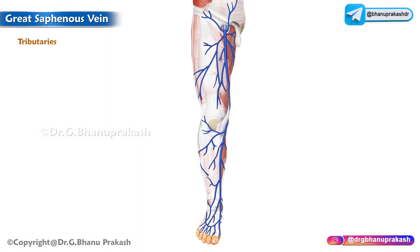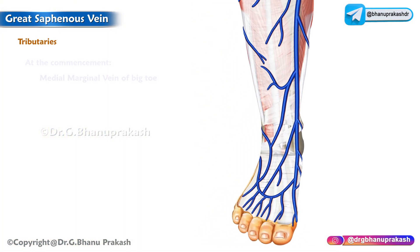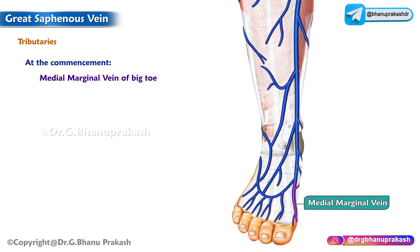It passes through the saphenous opening after piercing the cribriform fascia, where it drains into the femoral vein after piercing the femoral sheath.